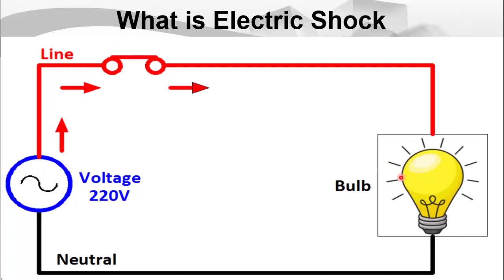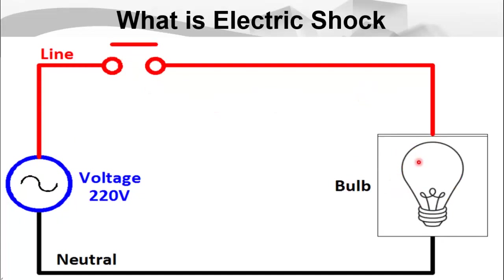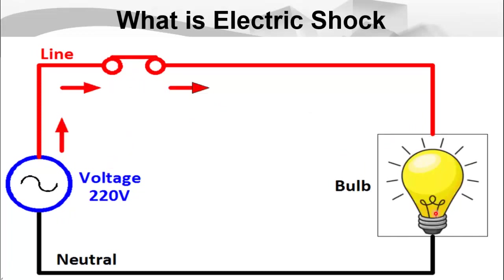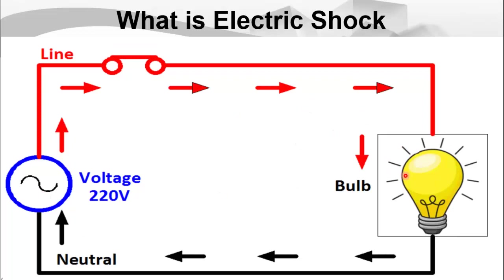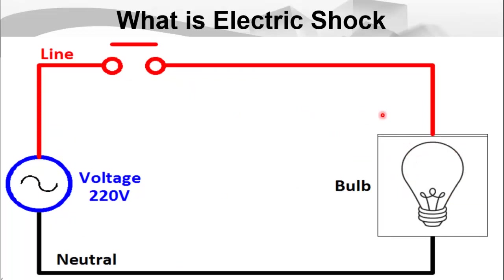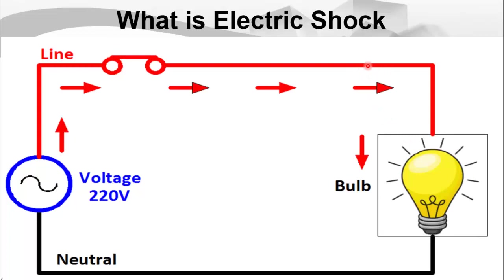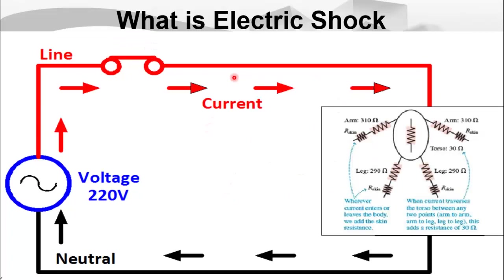In our case, this is a bulb. As soon as this switch is closed, the current starts to flow out from this voltage source into this bulb back into the neutral. Similarly, if our body touches a metal that is in contact with this phase conductor, we complete an electric circuit and the current will start to flow through our body into the neutral. That's why we experience an electric shock — because the current starts to flow into the body.